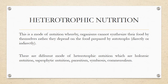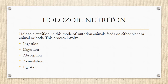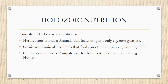Holozoic nutrition is the mode in which animals feed on either plants, animals, or both. This nutrition has some characteristics: ingestion, digestion, absorption, assimilation, and egestion. Remember this with the letters I-D-A-A-E: I for ingestion, D for digestion, A for absorption, the second A for assimilation, and E for egestion.